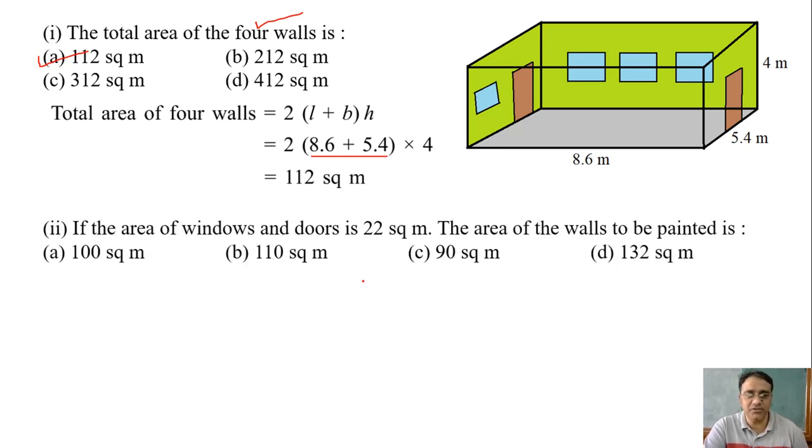Now the next question: if the area of windows and doors is 22 square meter, the area of the walls to be painted is what? The question is clear. Here the total area of four walls including windows and doors is given, and windows or doors ka area itna hai bol raha hai. So area of walls to be painted kitna hoga? 90. How you got 90?